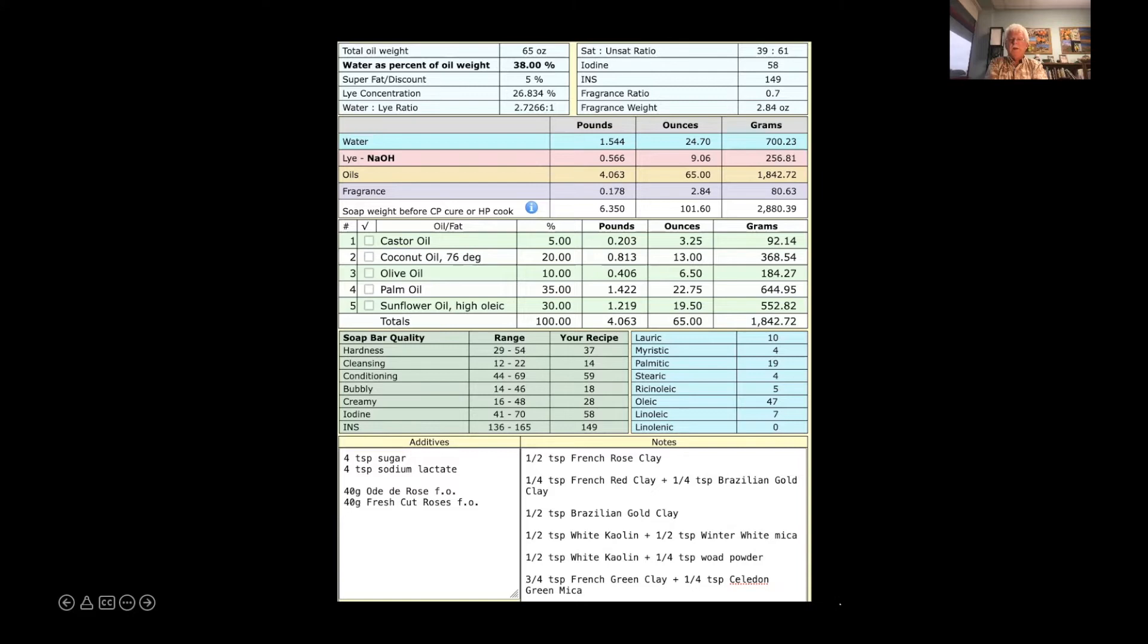White kaolin with some woad powder gives a nice shade of blue. I find woad is quite unpredictable from one batch to the next, you'll get a different shade, so I'm just kind of hoping for kind of a light sky blue here and we'll see what happens. And then French green clay, which doesn't give a lot of green color, I'm using a little more of it, three quarters of a teaspoon, and then also using some celadon green mica from Nurture Soap to try to turn it a little bit greener.